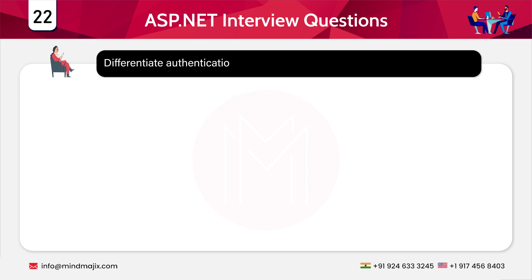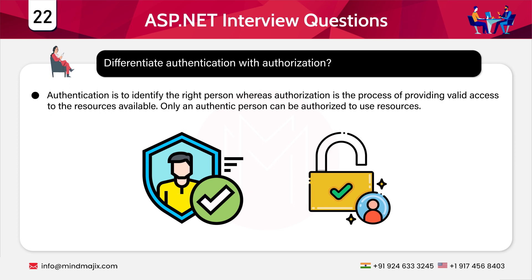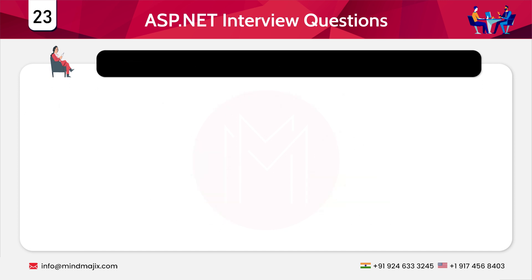The next question is: differentiate between authentication and authorization. Authentication is the process of identifying the right person, whereas authorization is the process of providing valid access to available resources. For example, if person A is allowed to view file A but cannot edit it — the process of identifying whether person A is eligible is authentication, and not providing edit access to person A is authorization.